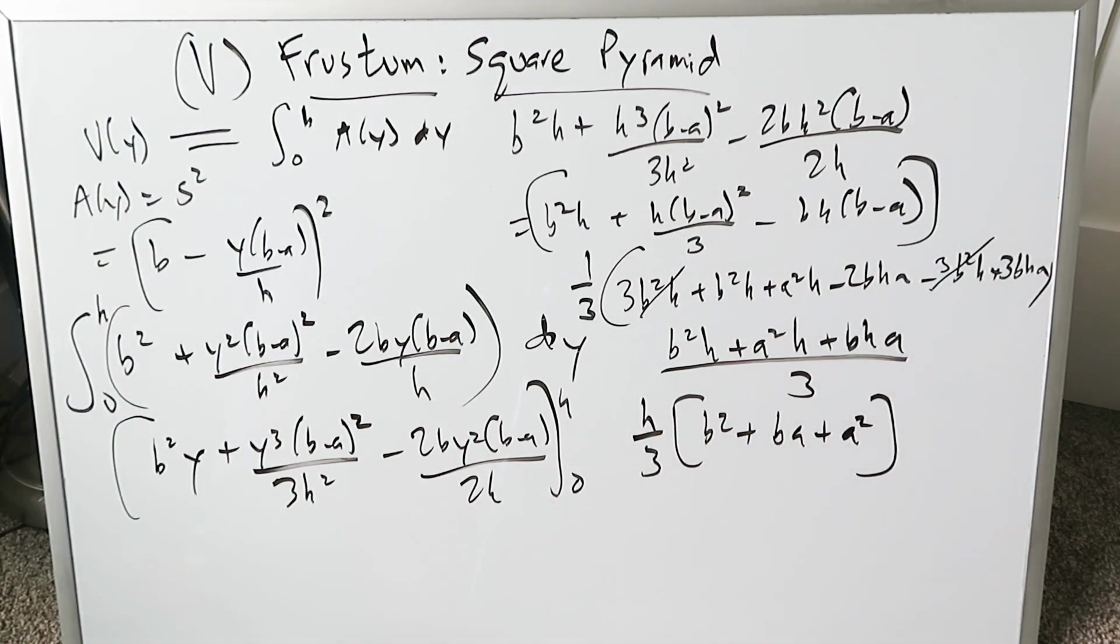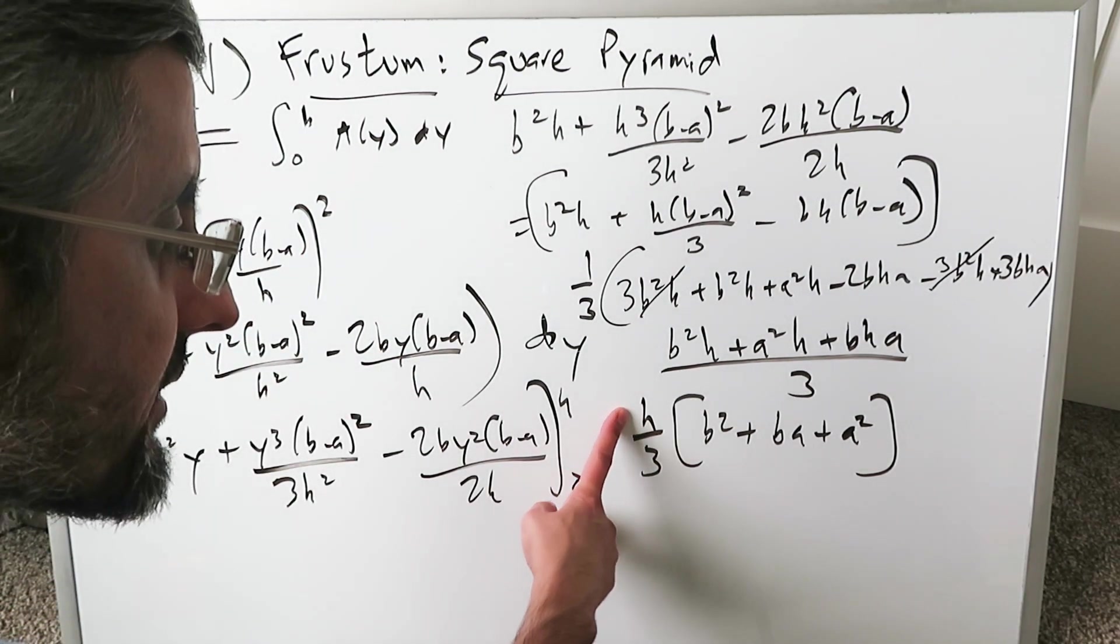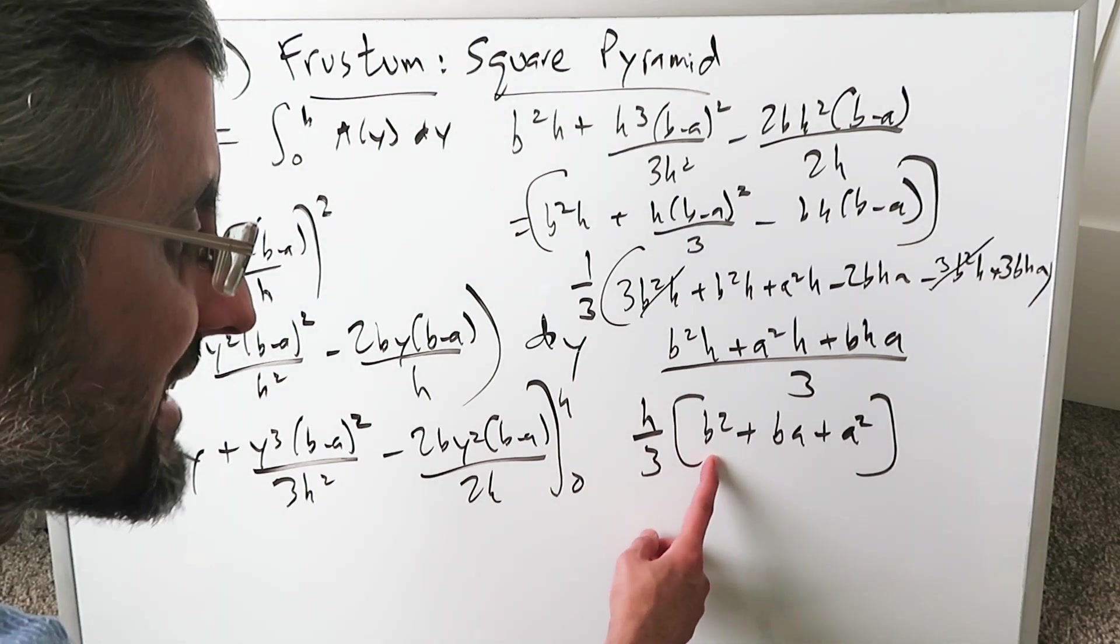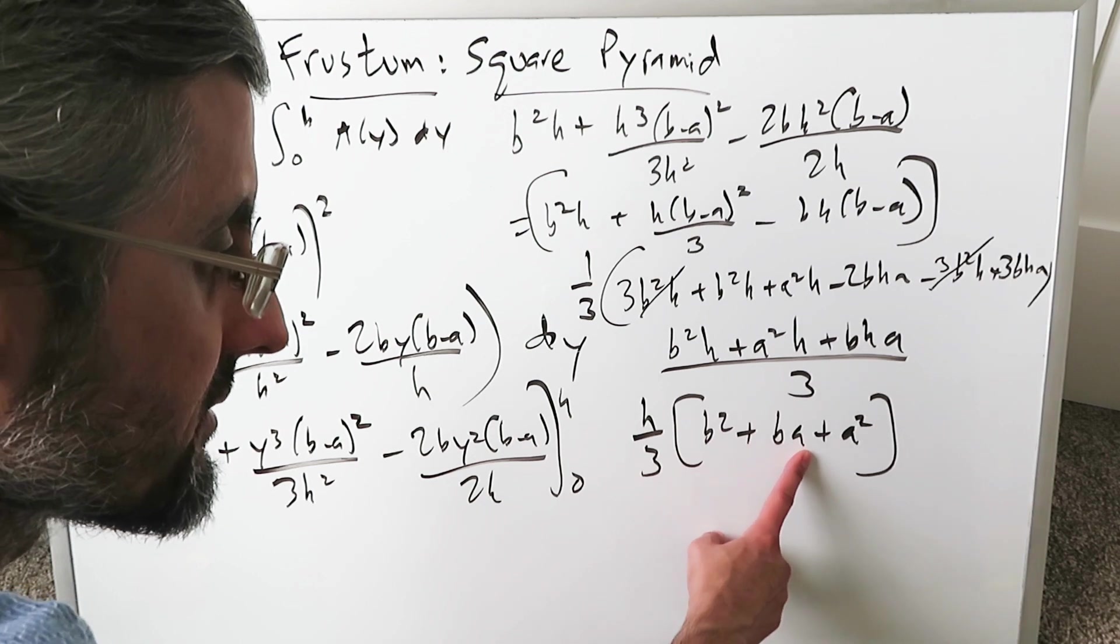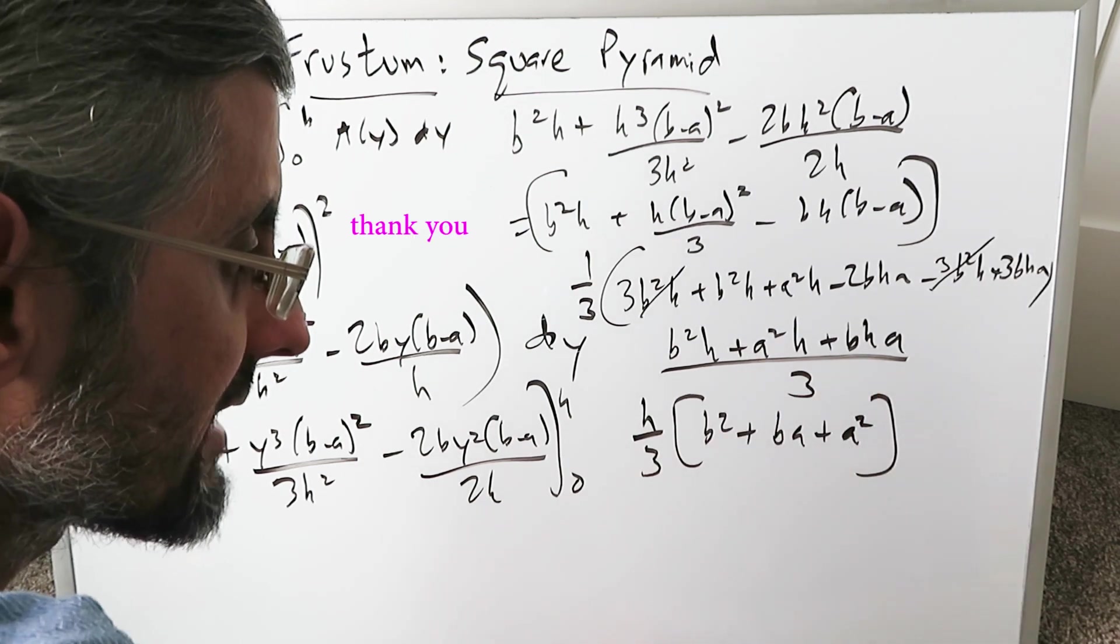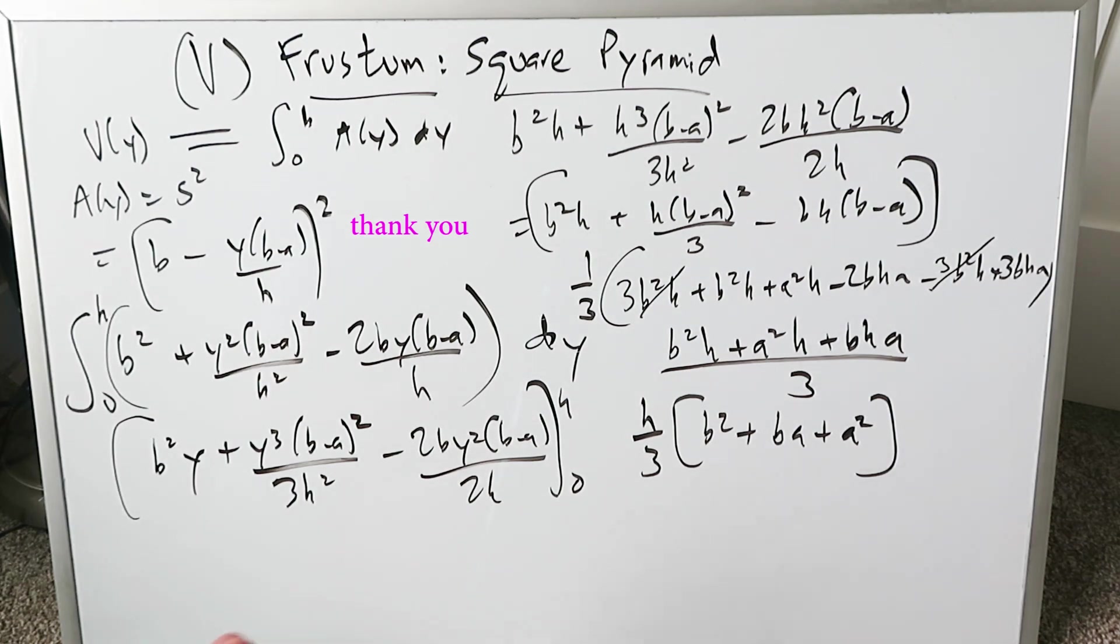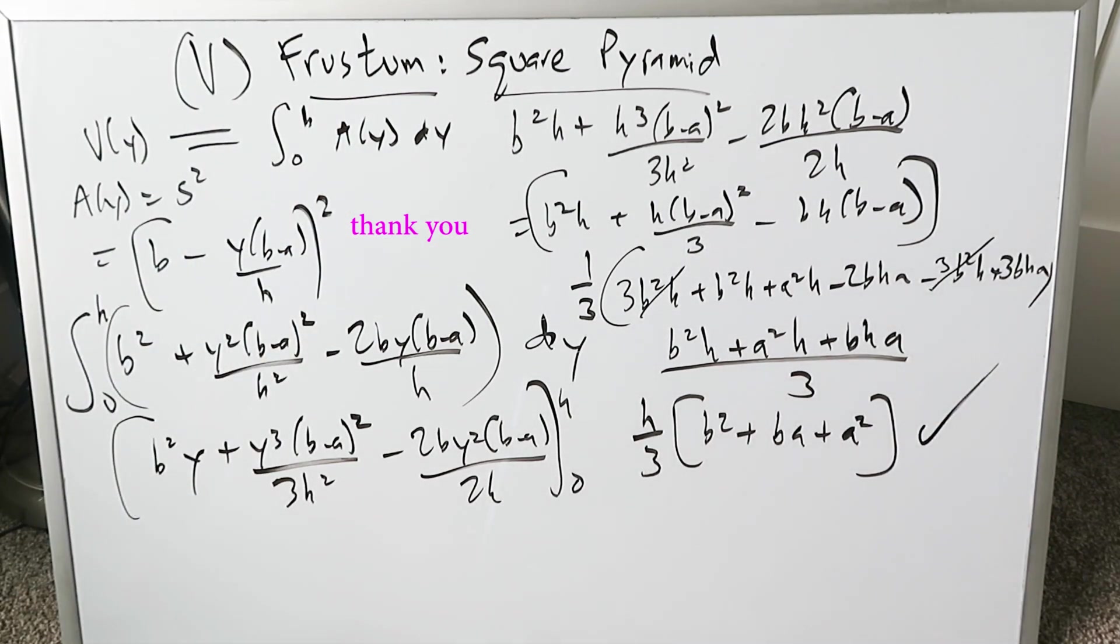This represents your volume formula for the frustum of a square pyramid. The H refers to the height of the frustum. B refers to the side dimensions of the lower base which is the larger area. The A refers to the side dimensions of the upper face, the smaller area. That's our volume formula. Thank you for watching, have a good day.